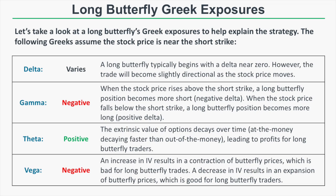If implied volatility increases after you initiate the butterfly with the stock near your short strike, it implies a larger expected move, meaning a lower probability the stock stays at your short strike — so the butterfly gets cheaper. Conversely, if implied volatility collapses, there's a smaller expected move, a higher probability the stock stays between your long strikes, and the butterfly gets more expensive. Overall, a long butterfly profits from the stock remaining near the short strike as time passes, and from volatility contraction. It loses if the stock makes a significant move or if implied volatility increases.